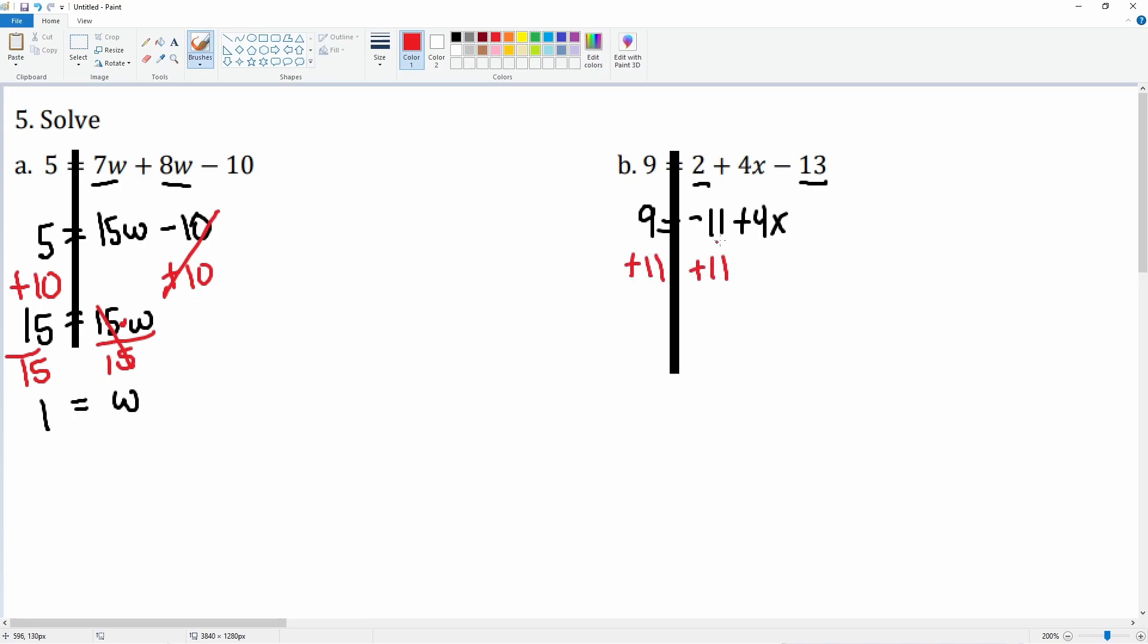This process will cancel the negative 11 and the plus 11. 9 plus 11 becomes 20 that equals the 4x. The 4 is attached by multiplication, so we're going to divide.